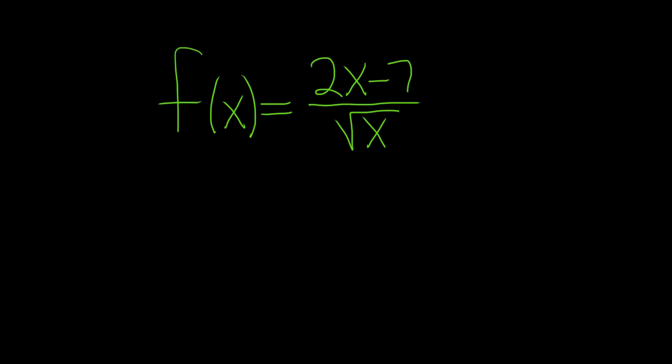The reason we can avoid it is because we have a monomial on the bottom, we have a single term. So whenever you have a single monomial, a single term on the bottom, you can avoid the quotient rule.